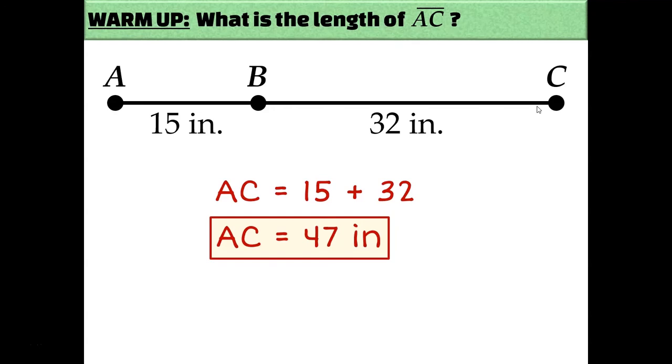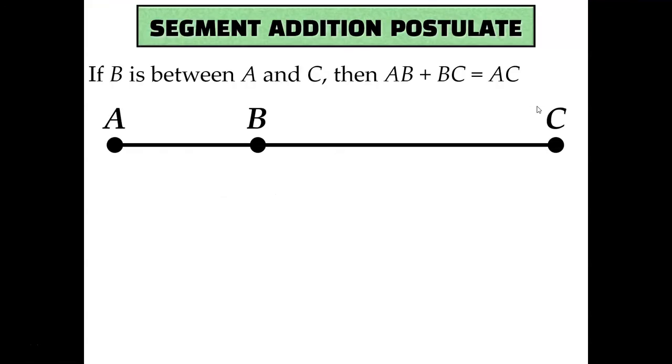And that, in a nutshell, is the segment addition postulate. The segment addition postulate says that if point B is between points A and C, then AB plus BC equals AC. So little part plus little part equals the whole thing.